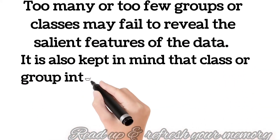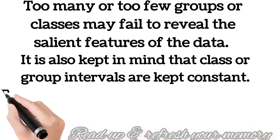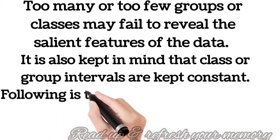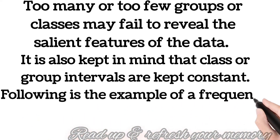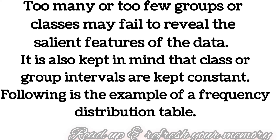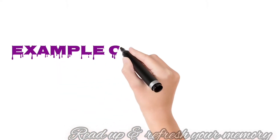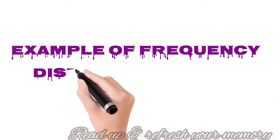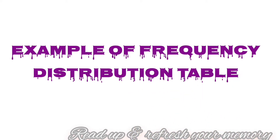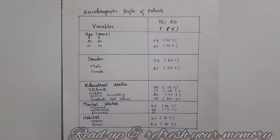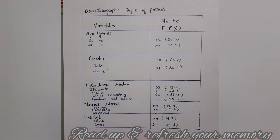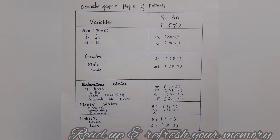Here, the attribute is grouped into a number of classes which may vary between 3 and 8 classes. If the classes or groups are too many or too few, it may fail to reveal the important features of the data. So, another important thing to keep in mind is that the class or group interval must be kept constant.